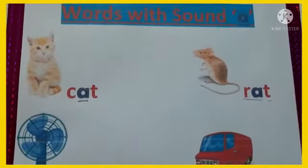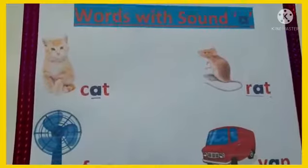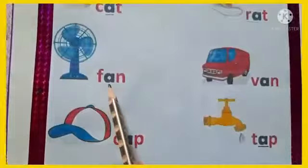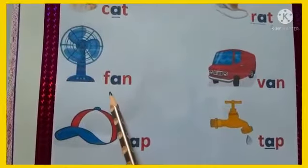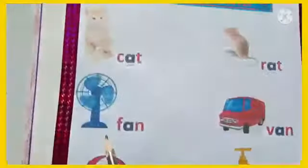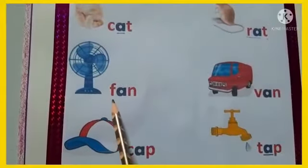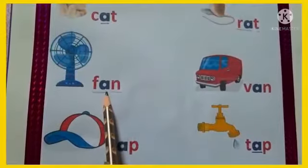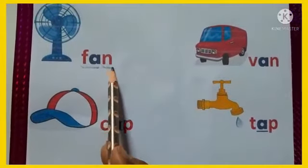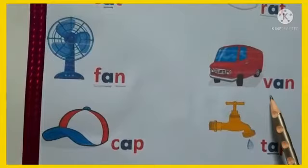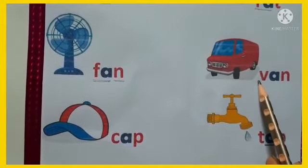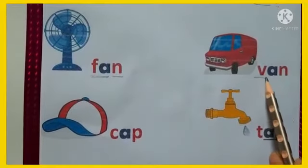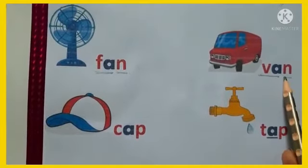Now, what is this? This is a fan. F, A, N — Fan. The sound we get from fan is A. And this is a van. V, A, N — Van.